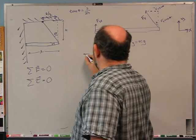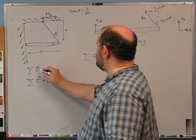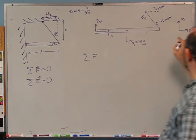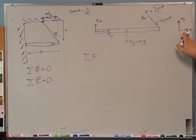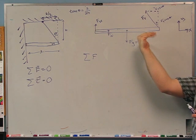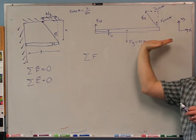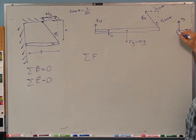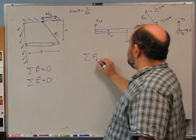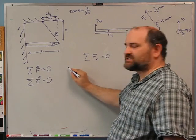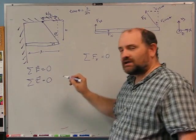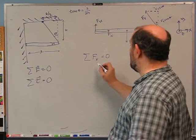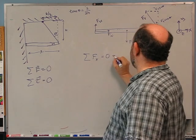We know the sum of the forces has to be zero. We break it into x, y, and z components. x cross y gives z, so z is out of the board. The sum of forces in the x direction has to be zero. The sum of the magnitudes of the forces is definitely not zero, but the sum of the forces in the x direction has to be zero. We've got Fn in the positive x direction and minus Ft sine theta in the negative x direction.